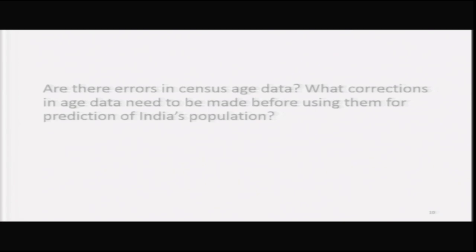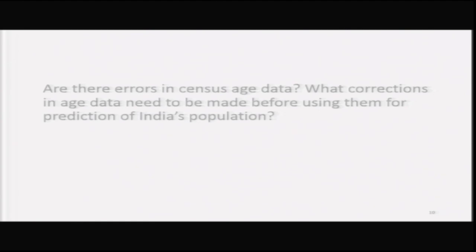Another question: are there errors in census age data, and how can we know? We have a model of age distribution. To correct errors in age data we make use of stable population theory, which provides age data for different values of life expectancy, death rate, and population growth rate. You can prepare age data for a particular stable population and compare it with your empirical data; this comparison reveals where the empirical population is underestimated or overestimated at certain ages, allowing correction before using them for prediction.